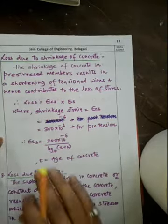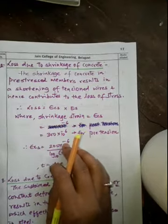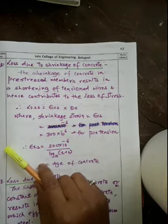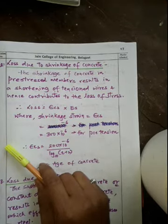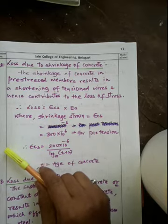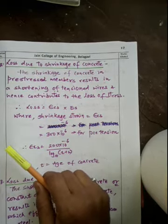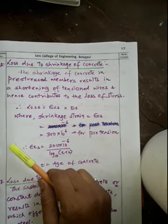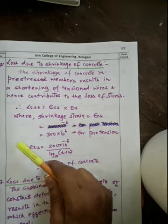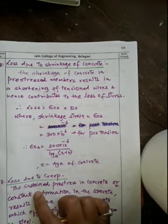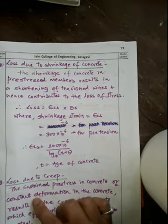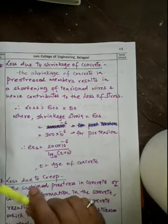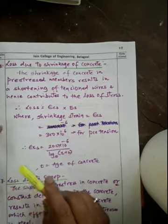Today in this session we are going to discuss further types of losses in prestressed concrete. In the last session we discussed the first loss, which is elastic deformation of concrete, and we solved problems for both post-tension and pre-tension systems. In today's session we are going to discuss the remaining losses.